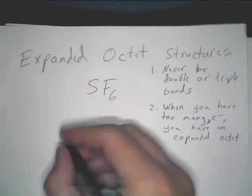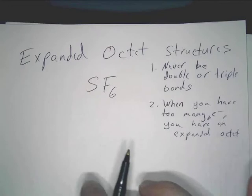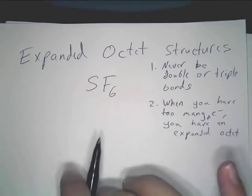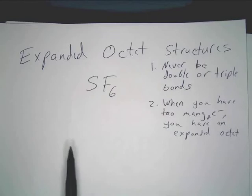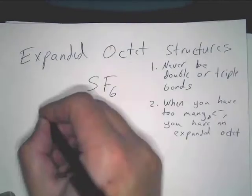Now, the way this is going to work, drawing these is actually easier, I think, than doing regular Lewis dot structures. Because you don't have to worry about double or triple bonds. All you have to do is just write your stuff in and create the structure and you're done. So let's find valence electrons first.